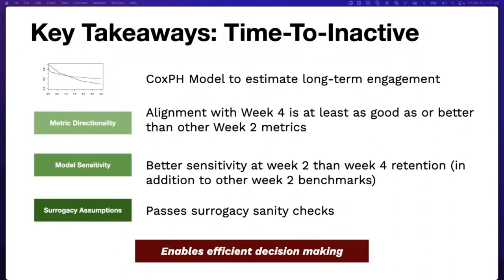In conclusion, simple survival models such as Cox proportional hazards can be used to estimate long-term engagement. The metric is directionally aligned to observed metrics, more sensitive, and passes surrogacy checks. Most importantly, it is more efficient — experimenters need not wait for several weeks to make decisions based on long-term engagement.